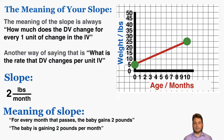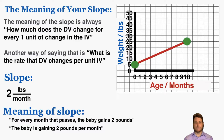As an example, imagine this is a graph of a baby's weight over time, according to its age in months, with weight measured on the y-axis. The slope has a value of two pounds per month. The physical meaning of this slope — because slope means how much does the DV change for every one unit of change in the IV — is that for every month that passes, the baby gains two pounds.